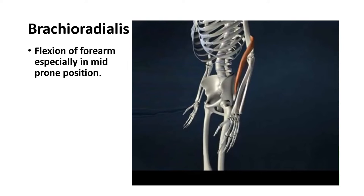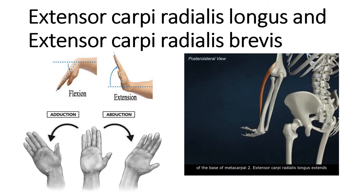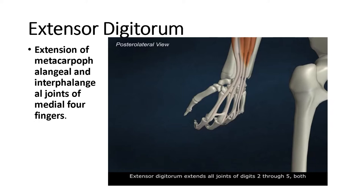Brachioradialis: its action is flexion of the forearm, especially in the mid-prone position. The action of extensor carpi radialis longus and extensor carpi radialis brevis is extension of the hand at the wrist joint, and abduction of the hand at the wrist joint.